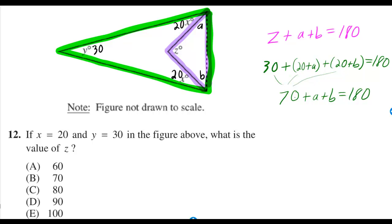30 plus 20 plus 20 is 70, so 70 plus A plus B is equal to 180. Subtracting 70 tells you A plus B is equal to 110.